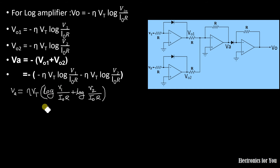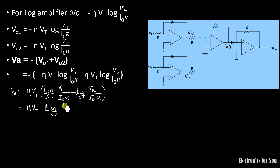Using the logarithm property log(a) + log(b) = log(a·b), we can combine the terms. Therefore Va = η·Vt · log(V1·V2 / (I0·R)²), where (I0·R)² = I0²·R² is the denominator.